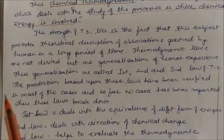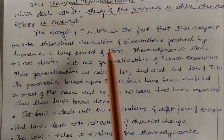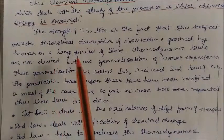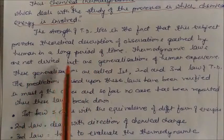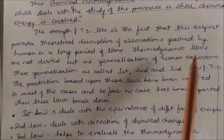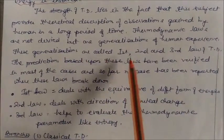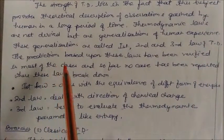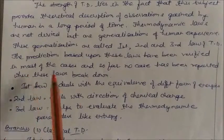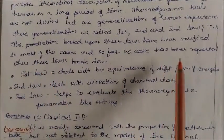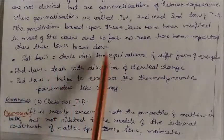The strength of thermodynamics lies in the fact that it provides a theoretical description of observations gained by humans over a long period of time. These laws are not derived mathematically — they are generalized from human experience. These generalizations are called the first, second, and third laws of thermodynamics, and the predictions based on these laws have been verified. So far, no case has been reported where these laws break down.